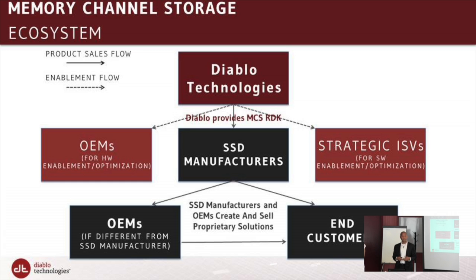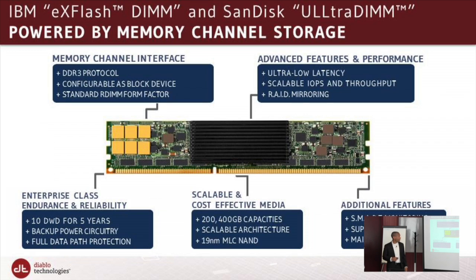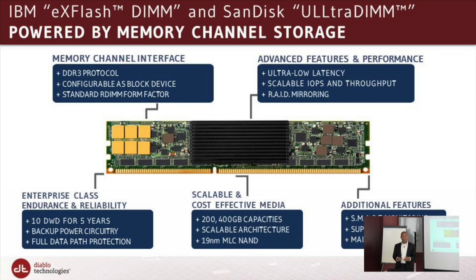There are two memory channel storage-based products on the market today: the IBM X FlashDim and the SanDisk UltraDim. Both are managed just like any other solid state drive. They come in 200 GB and 400 GB capacities per single module. Customers typically deploy four or eight devices in parallel — four 400 GB devices gives a 1.6 TB flash solution, eight gives 3.2 TB. This provides flash density and performance at latency and throughput levels customers haven't seen before from flash devices.